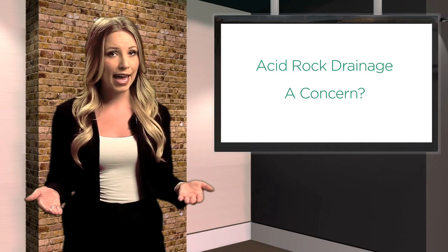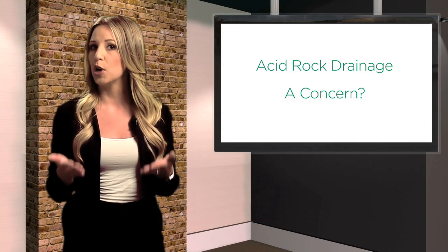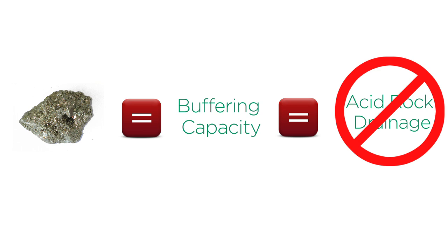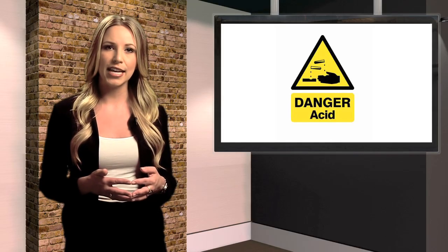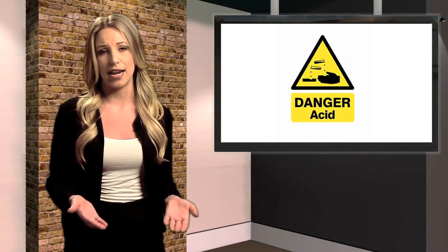For this reason, acid rock drainage is often raised as a concern when new mines are proposed. The presence of sulfides does not guarantee that acid rock drainage will happen, as many rocks contain sufficient buffering capacity to limit or prevent acid development from the sulfides present. Nevertheless, in the last 20 to 30 years, a much better understanding of the potential for acid drainage has evolved.